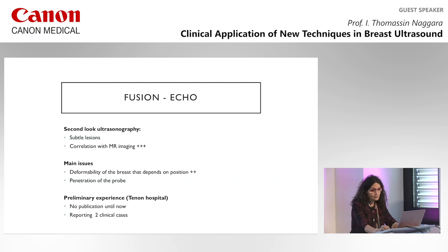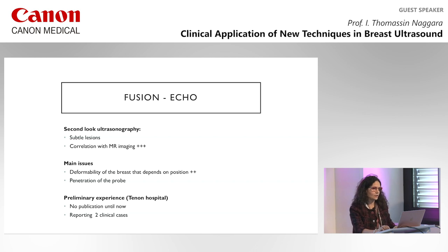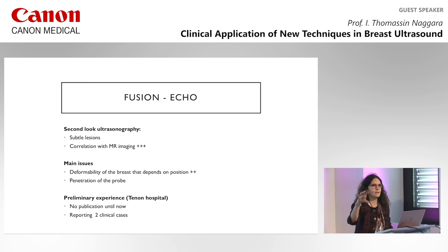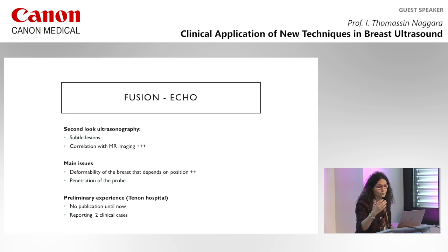The last part is about fusion — a preliminary experience. This technique is useful when performing second-look ultrasound because you have to detect lesions seen only on MRI. The correlation is not easy because MRI is performed in prone position while ultrasound is in supine position. Usually during second-look you use landmarks around the target lesion to confirm correct positioning, and fusion helps because you are more confident in the location of the detected abnormality.